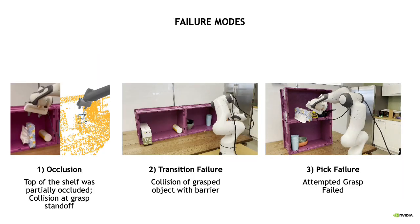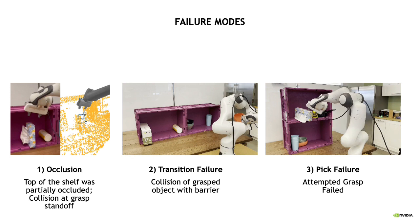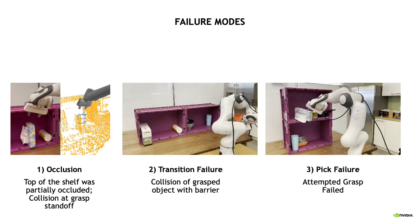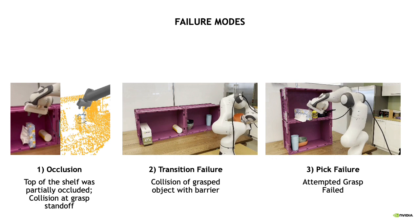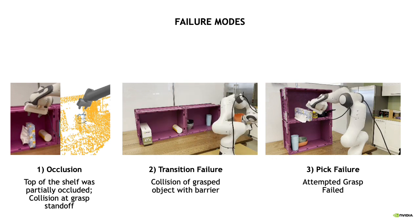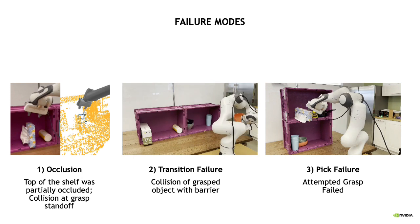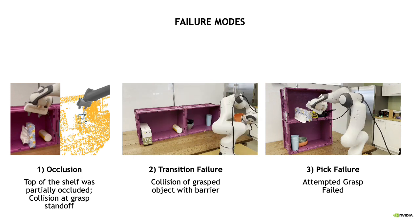Here are some of our failure modes. First, occlusion can lead to collision, such as on the left, when the top of the shelf is partially occluded. We can also have collision errors when transitioning between pick and place poses, such as in the middle. The initial grasp sometimes does not succeed, as shown on the right.